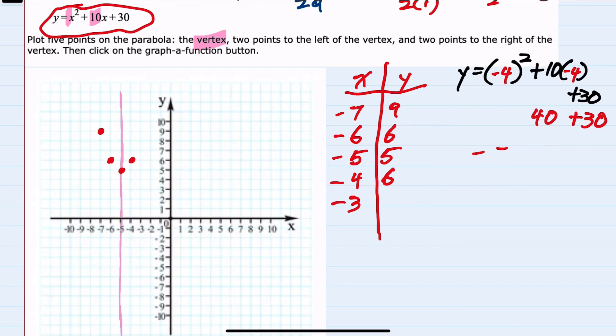And then our last point here, minus 3. That substitution gives us negative 3 squared, which is 9, 10 times minus 3, negative 30, plus 30. Negative 21, plus 30, which is 9. So our last point is negative 3, 9.